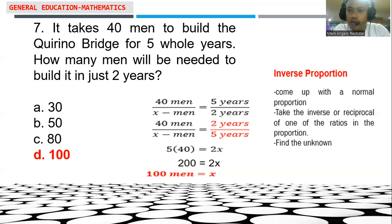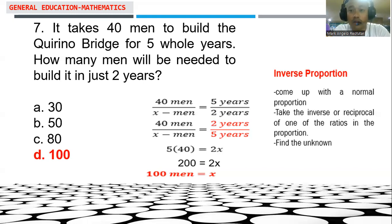Considering the process: we come up first with an original proportion — 40 men is to x men, equals 5 years over 2 years. Then we take the reciprocal of the second ratio, changing 5 over 2 to 2 over 5. That becomes the basis for solving the inverse proportion to find the number of men.